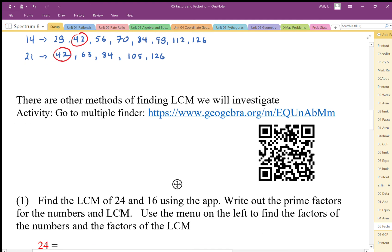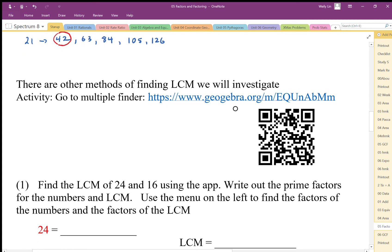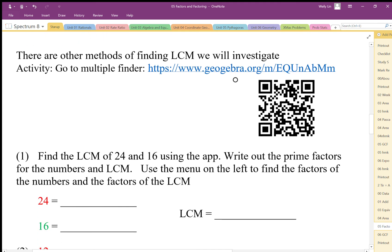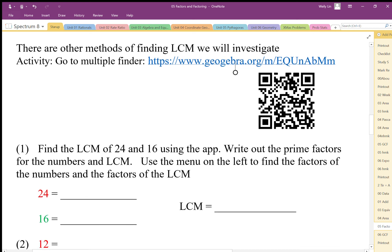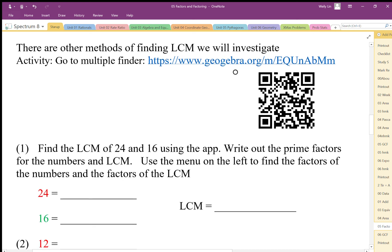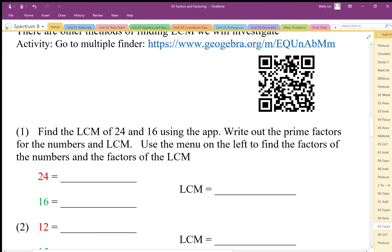What I would like you to do is go to the activity at this website, and then do these problems by actually putting in the numbers and find the lowest common multiple using the factors. You can see the prime factors, and you list out the prime factors for this when you see it on the menu on the left. I'll give you a demo on this for the first one.